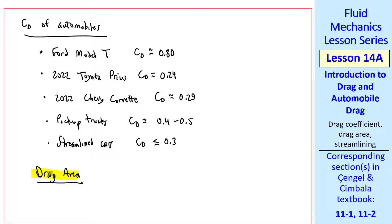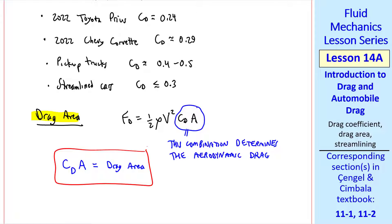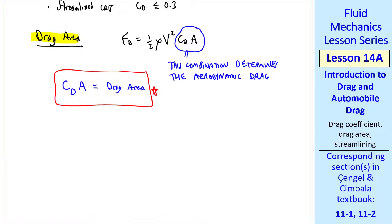Now I want to define something called drag area. We write FD as one-half rho V squared CDA. And we see this combination of drag coefficient and area that always occurs together. And it is this combination that determines the aerodynamic drag. CDA is called the drag area. So drag coefficient isn't everything. It's the product of CD and A that is important. If you have a small CD but a large area, you'll have a large drag.